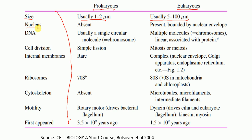Nucleus. In prokaryotes, nucleus is absent. This is one of the major features of prokaryotes. In prokaryotes, nucleus is absent, whereas in eukaryotes, nucleus is present and it is bounded by nuclear envelope.